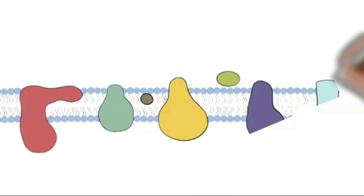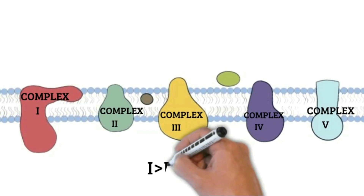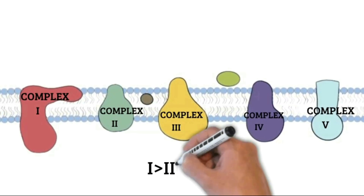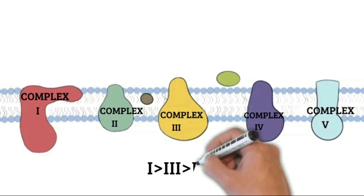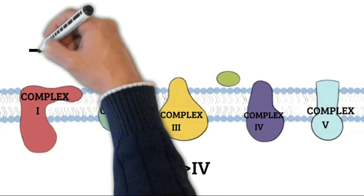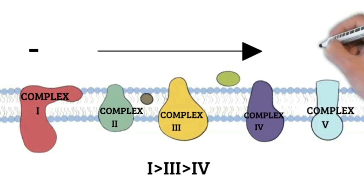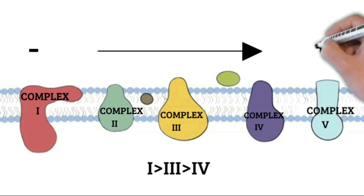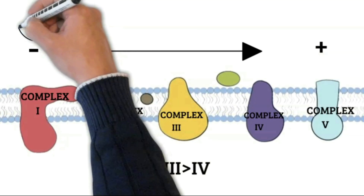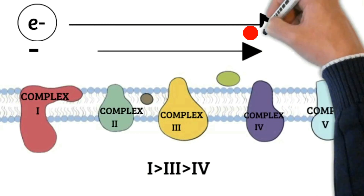The complexes are arranged according to increasing redox potential. Complex I has a negative redox potential, while Complex III has a positive redox potential, followed by Complex IV. Electrons will always travel from a negative redox potential to a positive redox potential. Hence, in the electron transport chain, electrons travel in one direction — from Complex I to Complex IV.